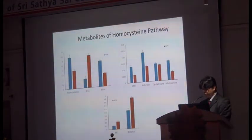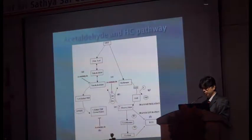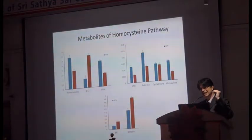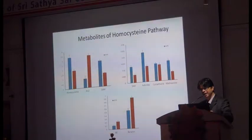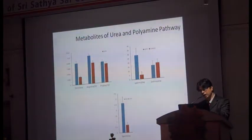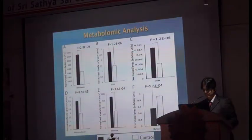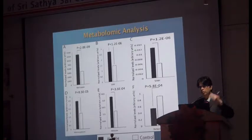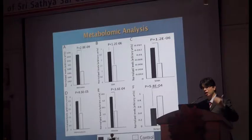When we did the metabolomics, we found homocysteine very high. Homocysteine in the plasma of AVN patients was statistically significantly elevated. All metabolites in the homocysteine pathway were statistically significantly high. We found vitamin B12, B6, and B10 deficiency to be statistically significant in all AVN plasmas. Urea and polyamine pathway metabolites were also raised in AVN — again statistically significant.